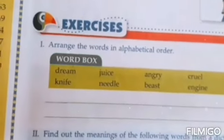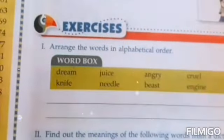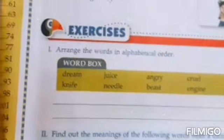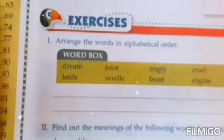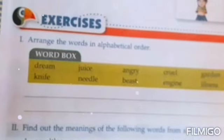In order to understand this chapter well, let's do some exercise. See, number one. Arrange the words in alphabetical order. One word box is given.